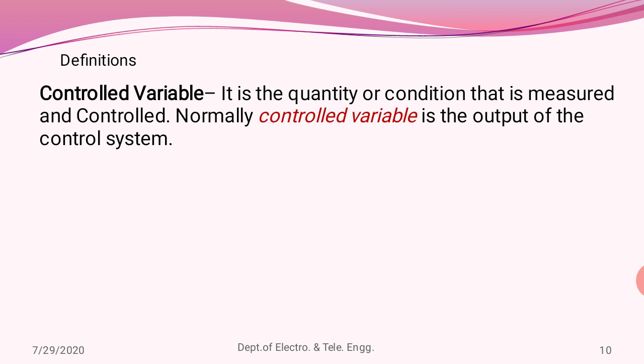To define a control system it is essential to understand the required parameters. The controlled variable is the condition by which the required parameters can be controlled. Normally, the controlled variable is the output of the control system.